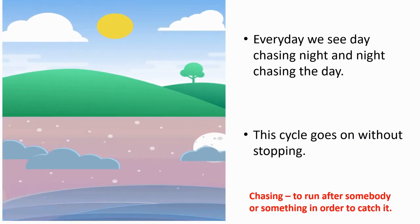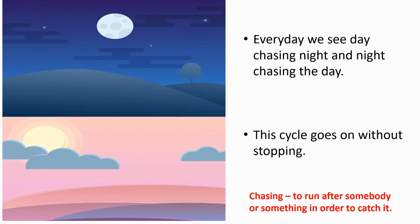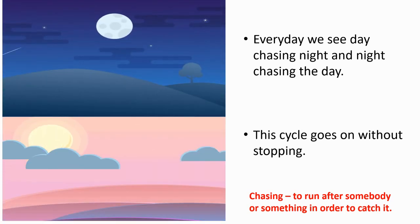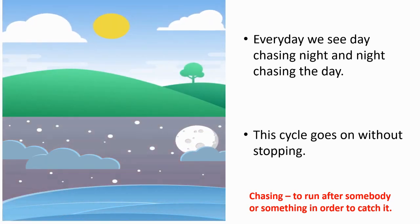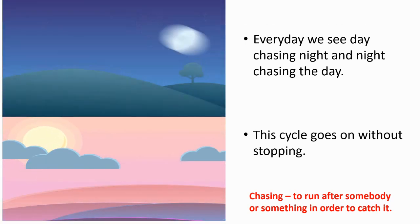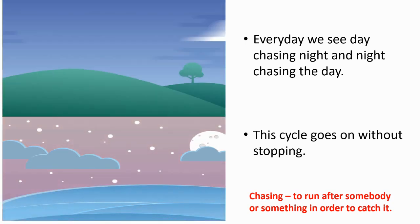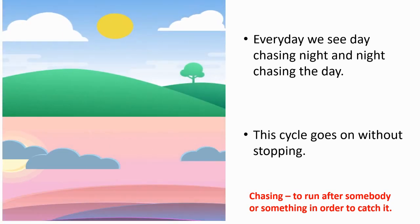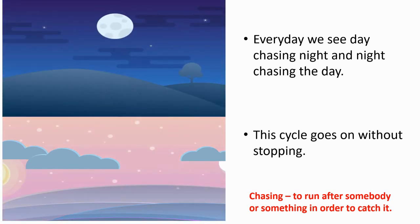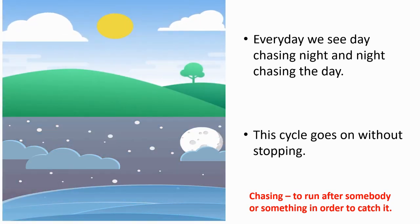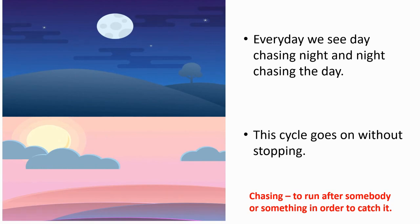Every day we see the day chasing night and the night chasing the day. The meaning of chasing is to run after somebody or something in order to catch it. After the day, the night appears, and after the night, the day appears. This cycle goes on without stopping.